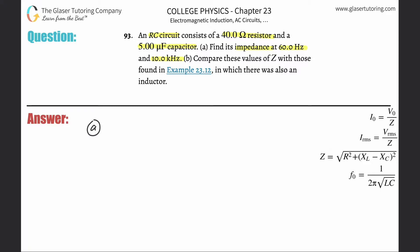Z will be equal to the square root of the resistance squared plus the difference between the inductive reactance and the reactive capacitance squared.